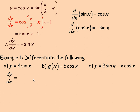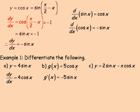In this example, we differentiate the following. For part a, differentiating 4 sine x: using the derivative of sine x equals cos x, this would be 4 times cos x, so the derivative is 4 cos x. For part b, differentiating 5 cos x: it would be 5 times the derivative of cos x, which is negative sine x, giving negative 5 sine x.